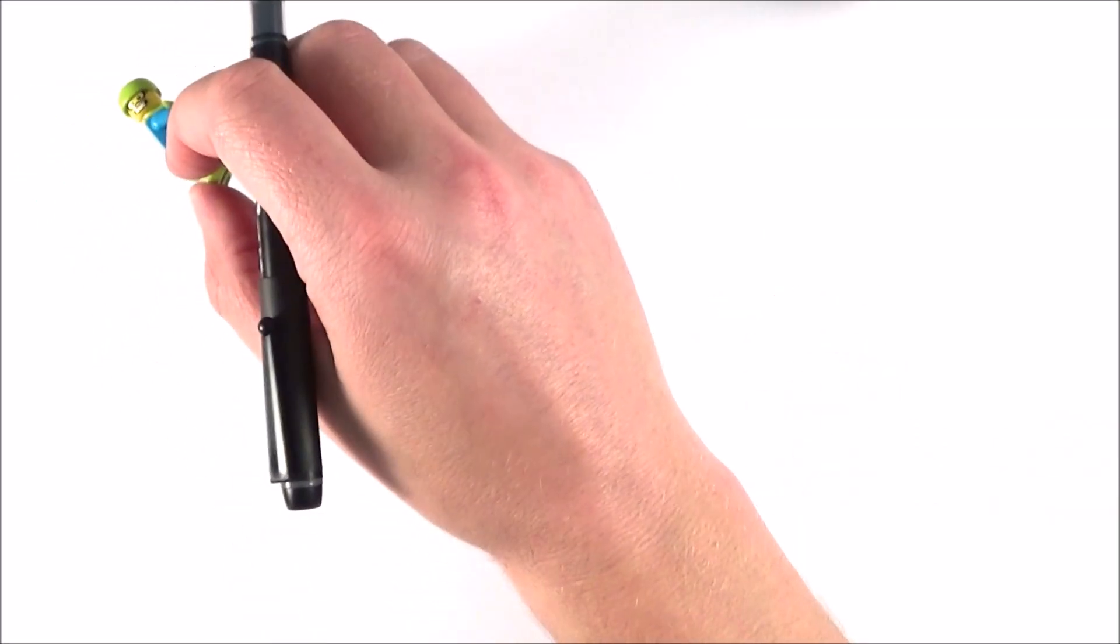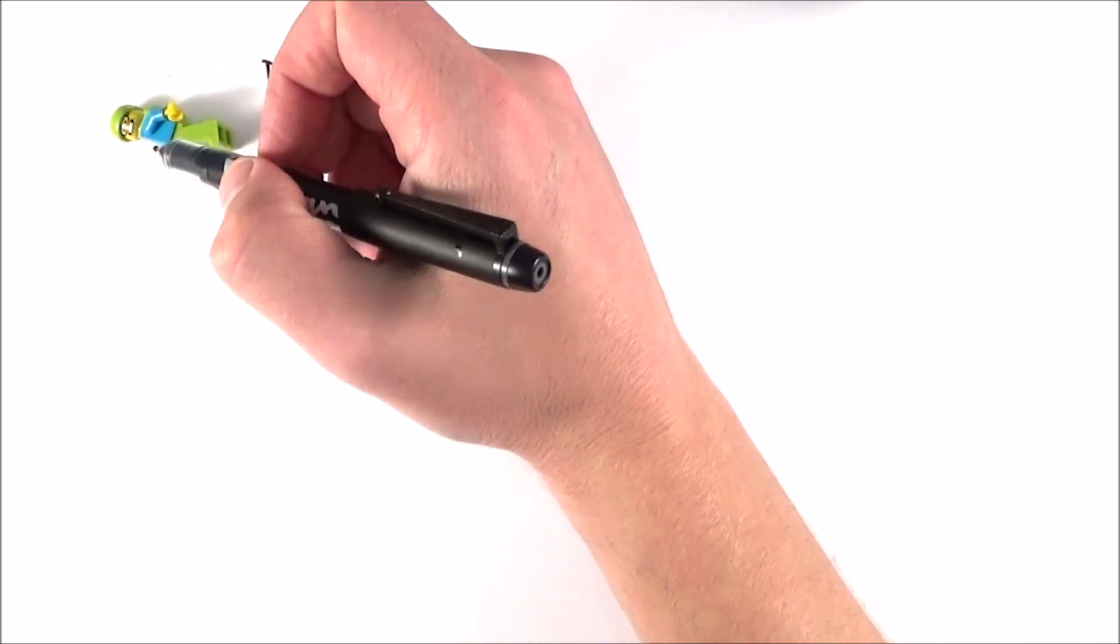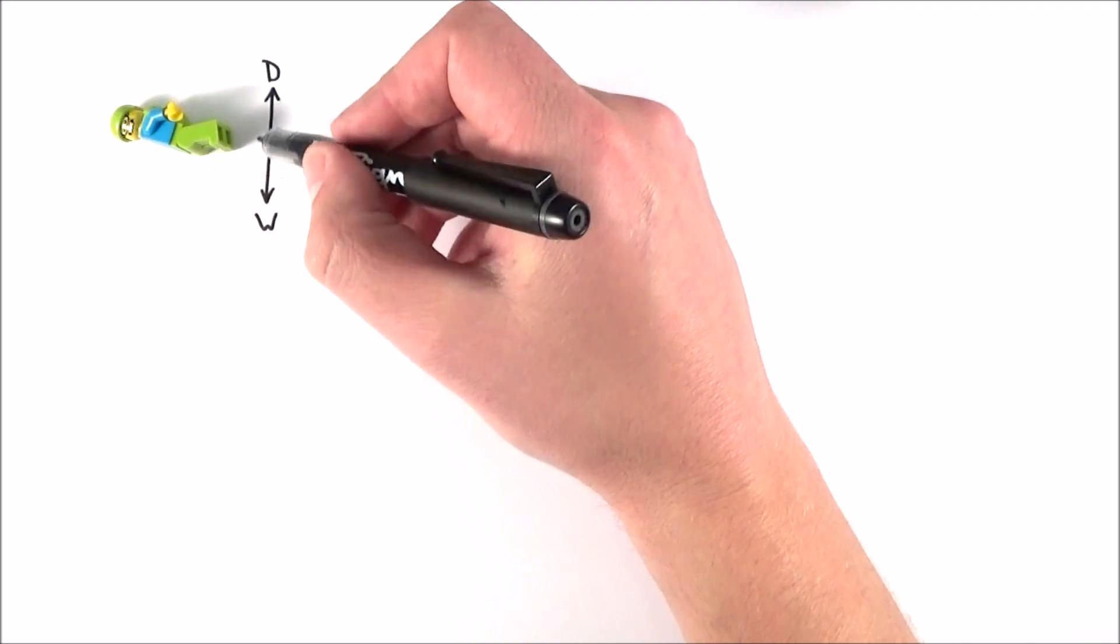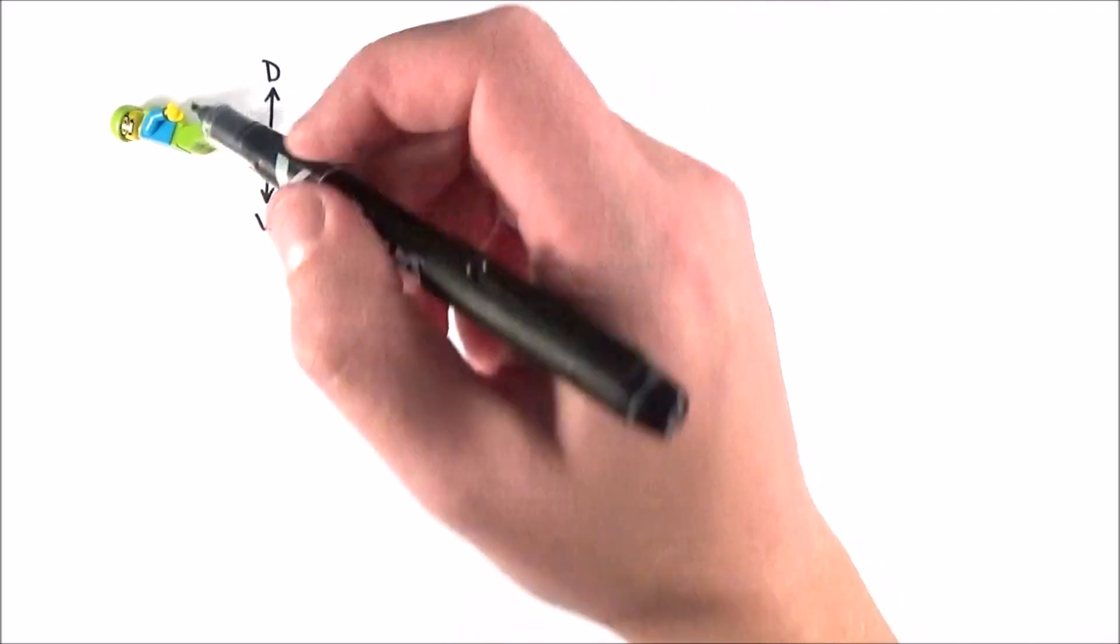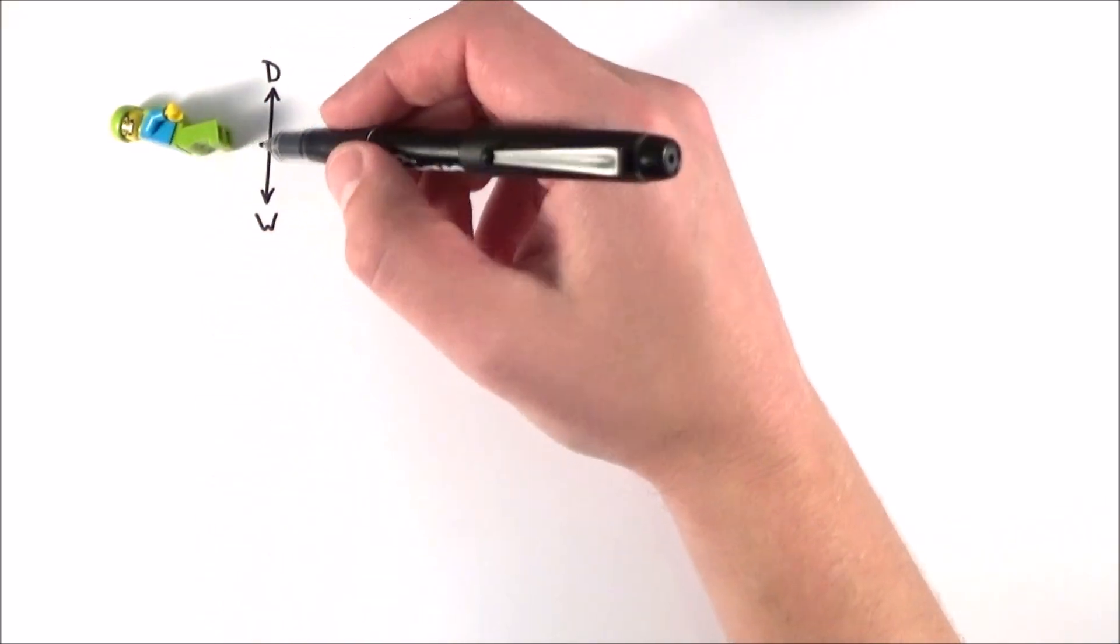So terminal velocity we can think about in terms of falling objects. If we have a parachutist maybe under free fall, then we know that their weight is equal to their drag force and therefore they're moving at this constant downwards velocity. But it doesn't just have to be things which are falling.